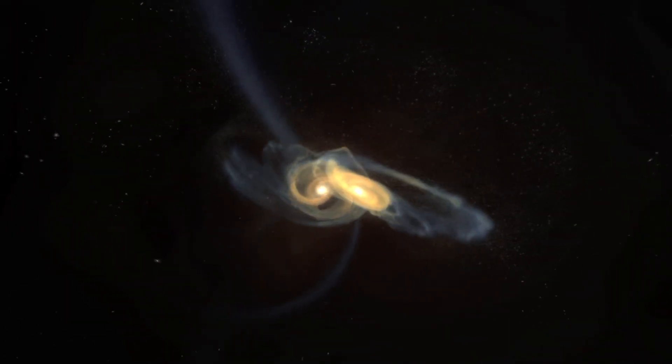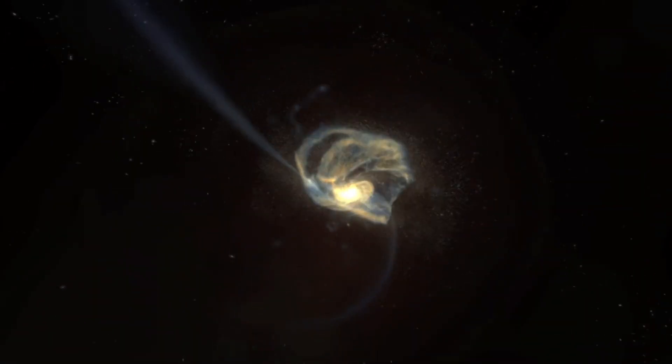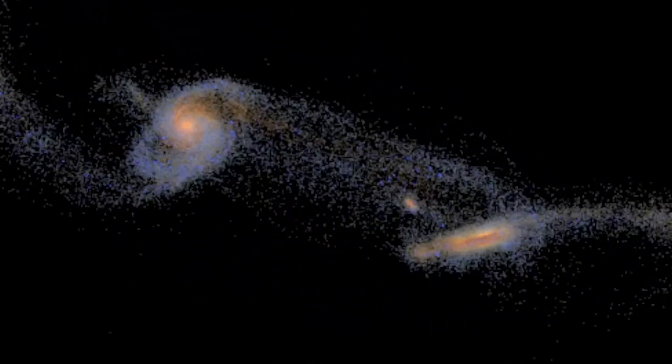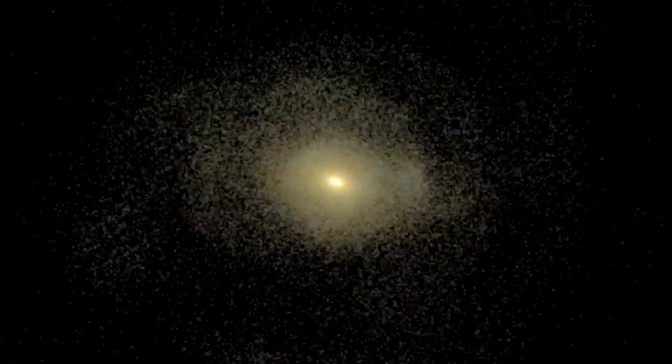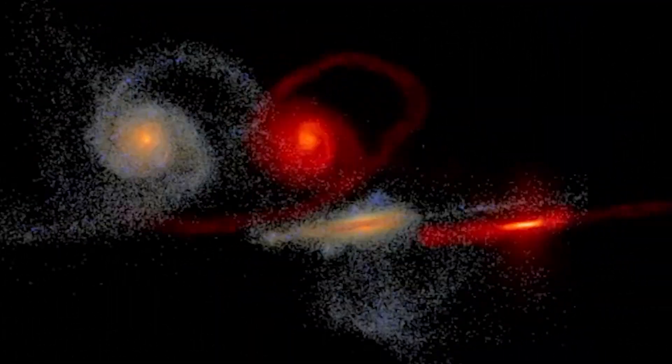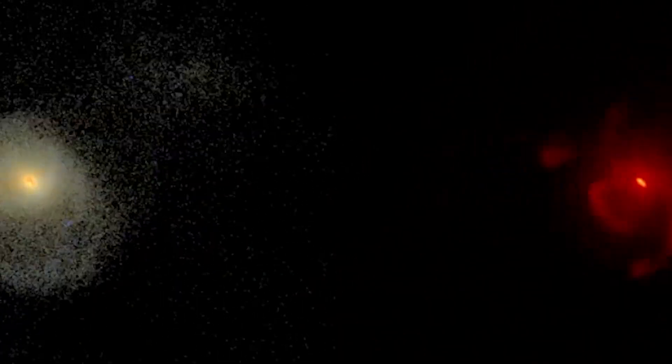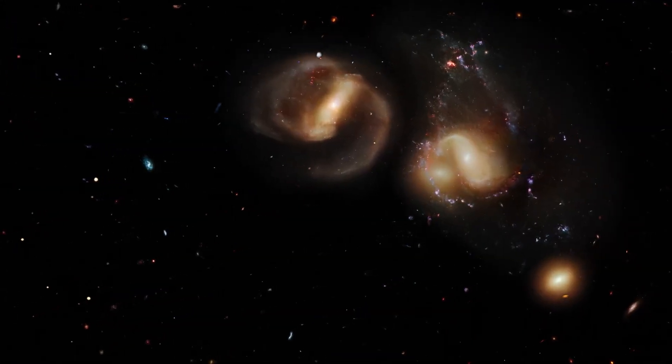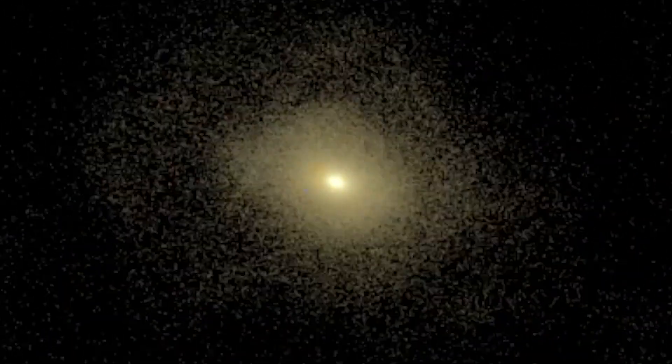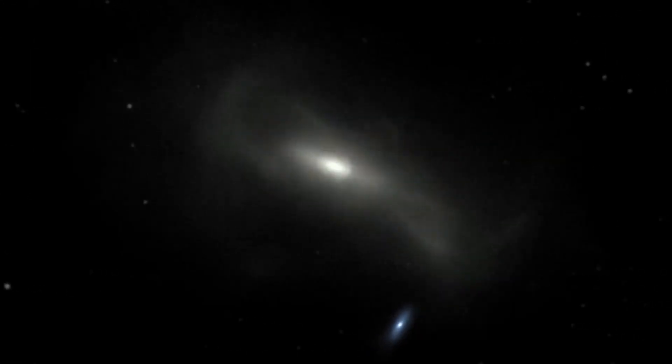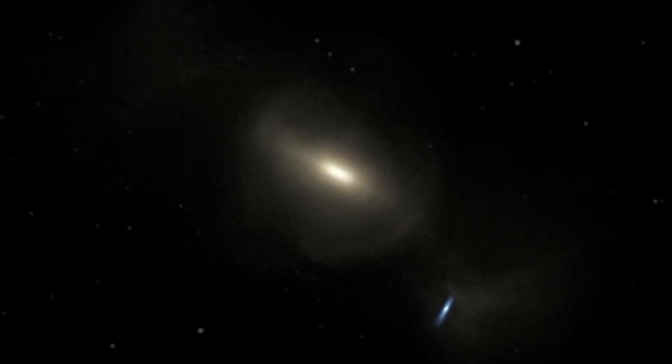Stars, gas clouds, and dust clouds from both galaxies mix, potentially forming new star clusters and structures in the newly combined galaxy. During this merger, the orbits of stars change dramatically, creating a dynamic and turbulent environment. Some stars might even be ejected from the merged galaxy, while others settle into new, more oval paths.